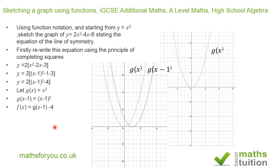Now for this one, which is graph number three, f of x is the same as g of x minus 1 minus 4. So now we're going to translate graph 2 by 4 units downwards.